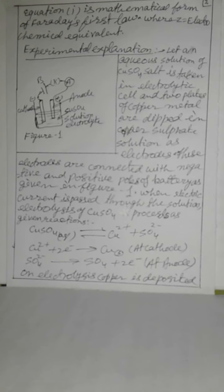CuSO₄ dissociates: Cu²⁺ ion plus SO₄²⁻ ion. Cu²⁺ ion plus 2 electrons → Cu solid at cathode. SO₄²⁻ → sulfate plus 2 electrons at anode. On electrolysis, copper is deposited at cathode. Experimentally it was found that the amount of copper deposited at cathode depends upon the amount of current passed through the solution — meaning the amount of copper is directly proportional to the amount of current passed.